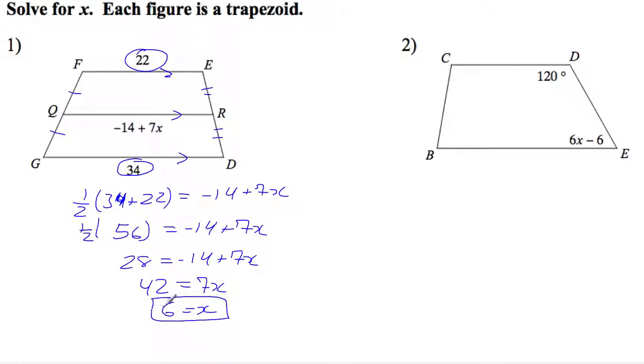And there we go. If I plug that back in, 7 times 6 is 42, and 42 minus that 14 is going to give me 28. If you notice, 28 is both 6 away from 22 and 6 away from 34. Nice little trick in checking your answer there.